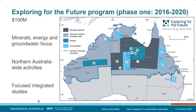The way we've done this is through the Exploring for the Future program, or EFTF for short. EFTF is really at the pointy end of a process of thinking about how we can predictably map out potential for new mineral resources. It's grown out of a number of previous programs that GA and state surveys have had — one of those magic points in time where we've learned a lot of lessons and now we're ready to start applying them.